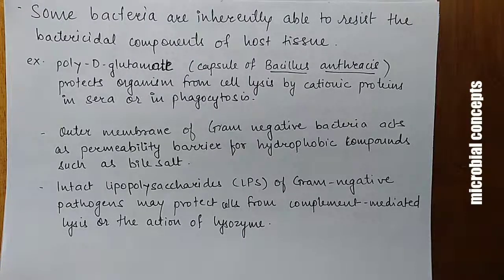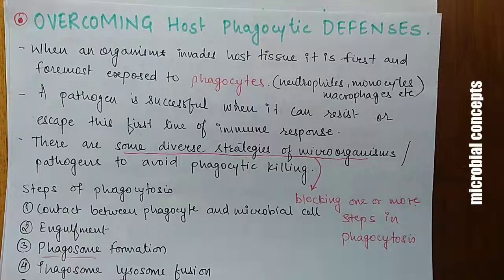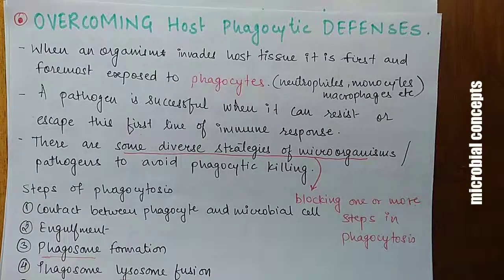The complement system has two pathways: the classical pathway and the alternative pathway. Both end by forming pores in the cell wall, altering permeability and leading to cell lysis. The first main point we will study under evasion is overcoming host phagocytic defenses.